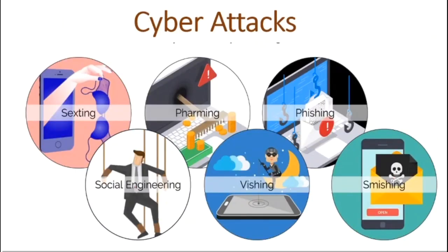There are some well-known attacks in cybersecurity. First is sexting — sending inappropriate images or videos to friends or others who misuse them; once you share an image it is difficult to control what happens to it. Second is social engineering — a broad range of malicious activity accomplished through human interaction using psychological manipulation to trick users into making security mistakes or giving away sensitive information. Third is pharming — a cybersecurity attack that redirects website traffic to a fake website, for example redirecting you from the real SBI.com to a fake lookalike site by changing the host file or exploiting a vulnerability in DNS server software.